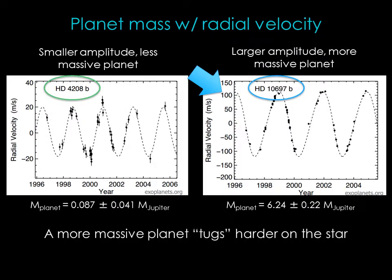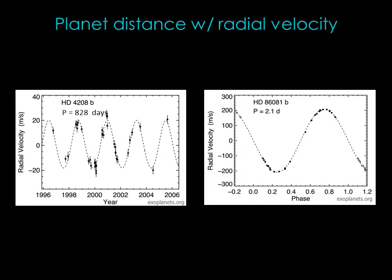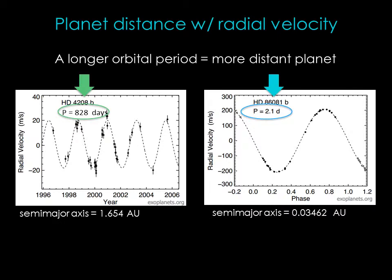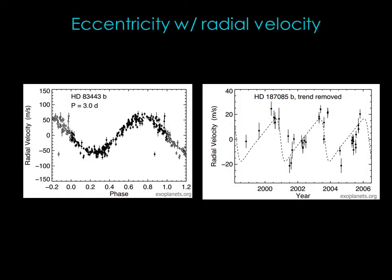A more massive planet will tug on the star more, causing a larger amplitude for the radial velocity. The Doppler method can also tell us about a planet's orbit. The star on the left has a long orbital period, and the star on the right has a shorter orbital period. Remembering Kepler's third law, a planet with a longer period is in a more distant orbit — therefore planet HD 4208b must be farther from its star than planet HD 86081b. We can also determine how eccentric the planet's orbit is: an asymmetric radial velocity curve tells us the orbit has a large eccentricity, while a symmetric curve indicates a more circular orbit.